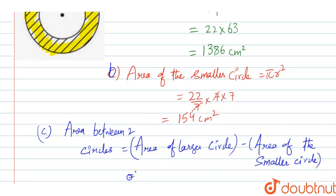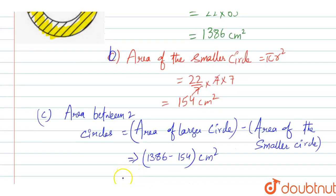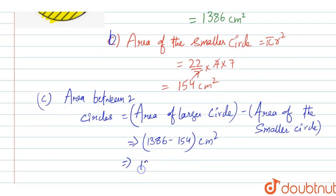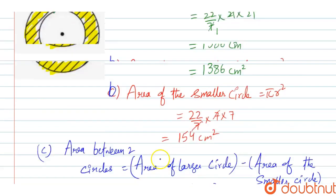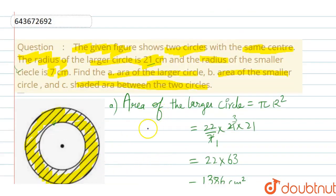So 1386 minus 154—1386, not 68—1386 minus 154 bracket centimeter square. So our final answer is 1232 cm square is the area between the two circles. That's it.